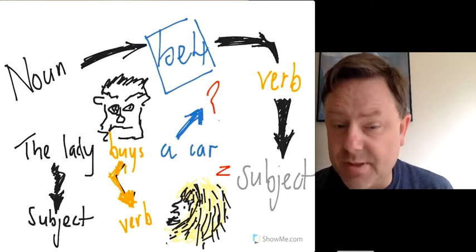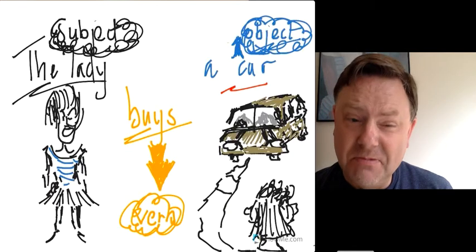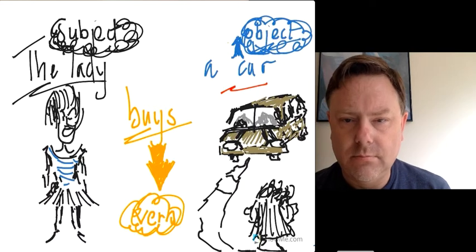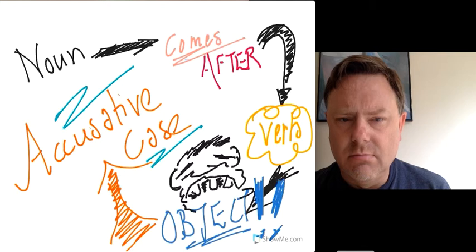So for example, the lady buys a car. The lady is the subject and buys is a verb. However, the lady buys a car. A car, ladies and gents, coming after the verb is an object. Yes, it's an object.